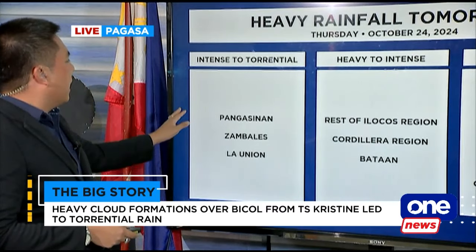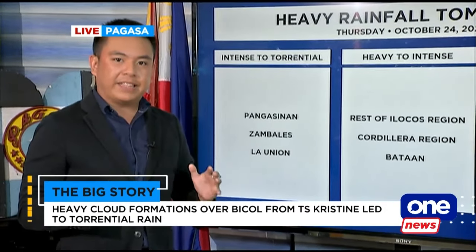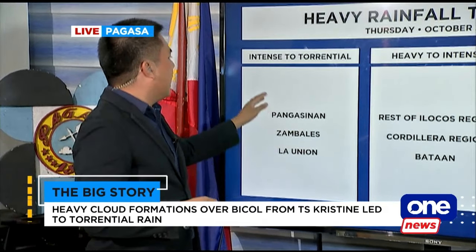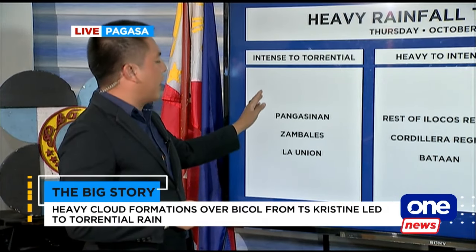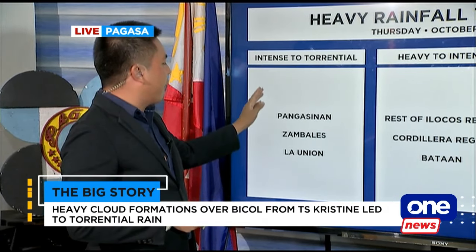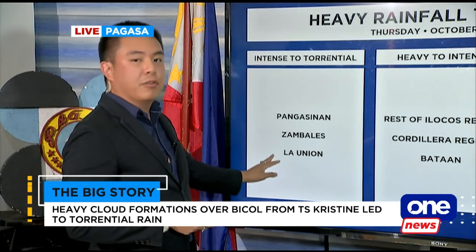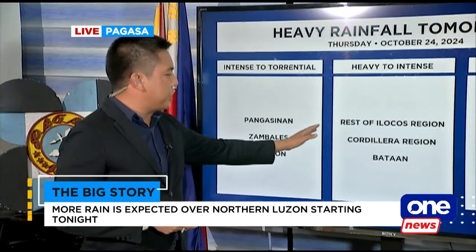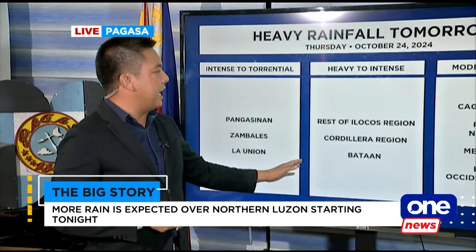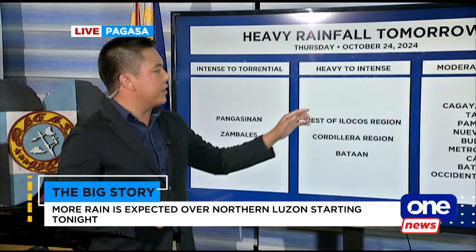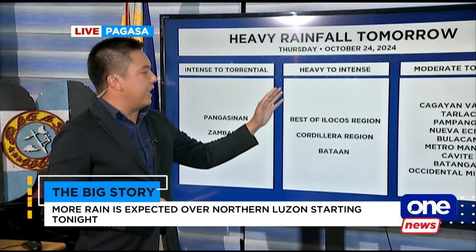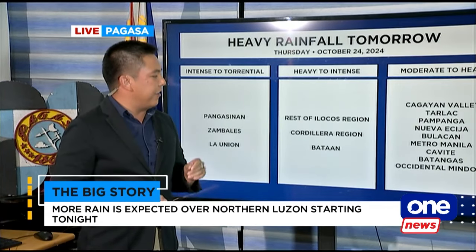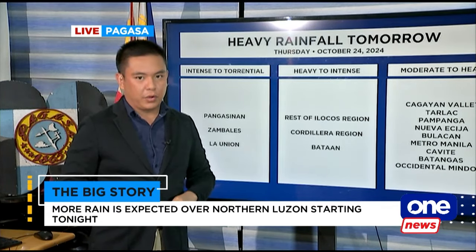For tomorrow, since we are expecting the storm to move, PAGASA is expecting intense or torrential rains over Pangasinan, Zambales, and La Union; heavy to intense rains over the rest of Ilocos region, Cordillera region, and Bataan; and moderate to heavy rains in Cagayan Valley, Tarlac, Pampanga, Nueva Ecija, Bulacan, Metro Manila, Cavite, Batangas, and Occidental Mindoro.